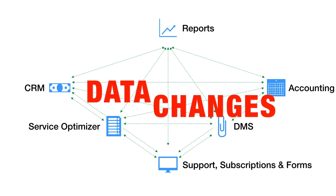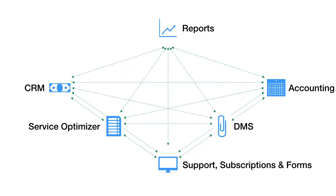This means Patrick makes major decisions for his dealership based off of a discrete point in time. For example, he may have received data from his CRM 8 hours ago, from his DMS 2 hours ago, and from accounting 10 minutes ago. Unbeknownst to him, a major sale was recorded in the accounting system 30 minutes ago, but this would not reflect in his DMS or his CRM data, meaning his report will give him misleading, incomplete information.